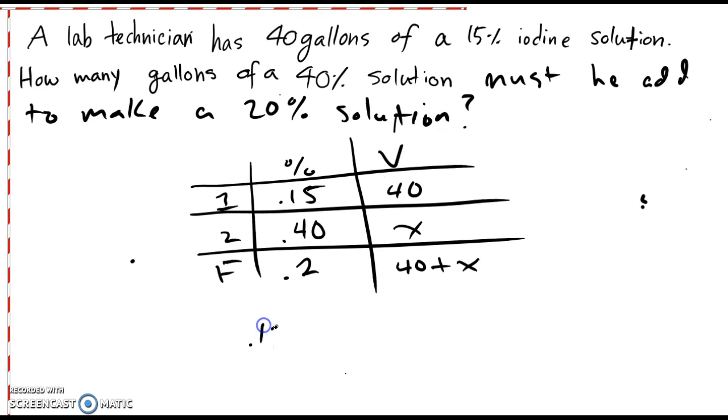Now we're going to do 0.15 times 40 plus 0.4 times x is equal to 0.2. And it's very important that you have the parentheses here.